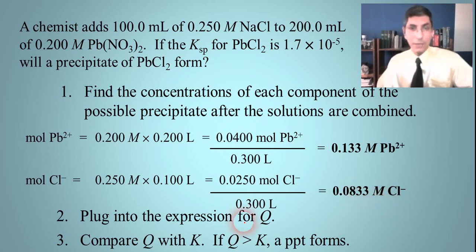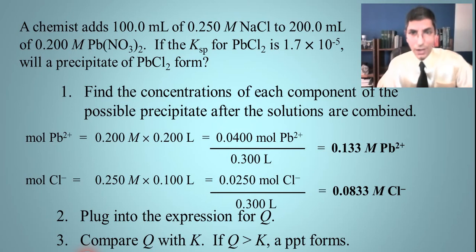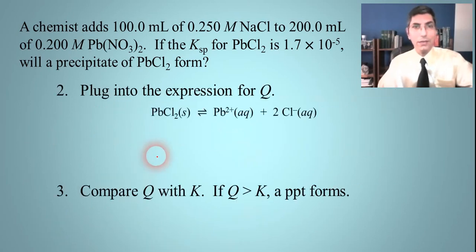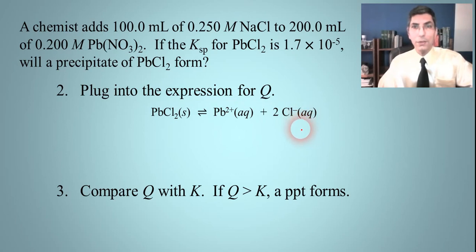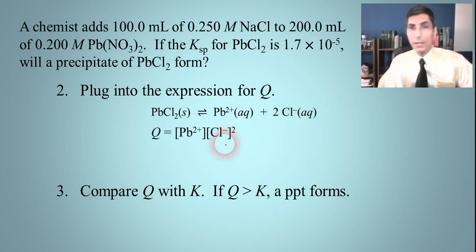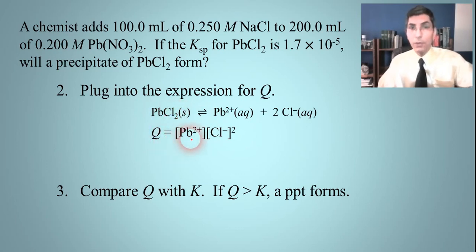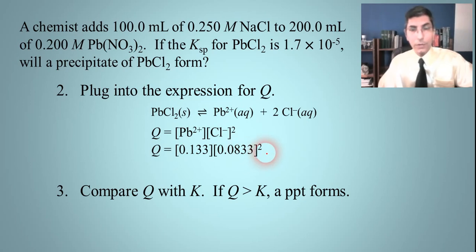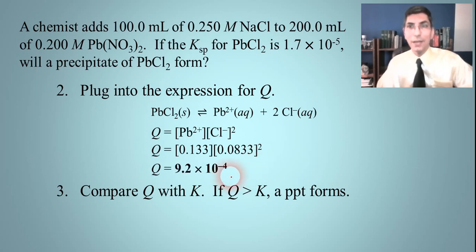Now we plug these numbers into the expression for Q. Going back to the reaction — lead(II) chloride yields lead(II) ions and two chloride ions — the expression for Q is: lead ion concentration times chloride ion concentration squared, just like the K expression. Solids are omitted from equilibrium expressions. So Q equals 0.133 times (0.0833)², and when we calculate that, we find that Q equals 9.2 times 10 to the negative fourth.